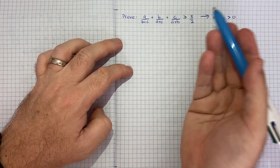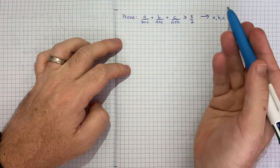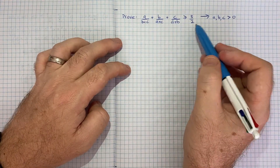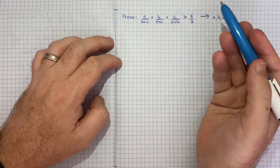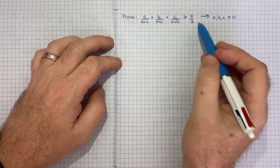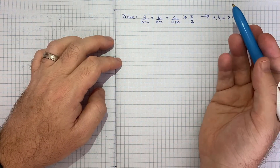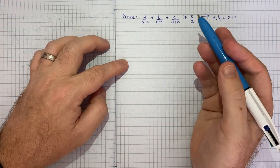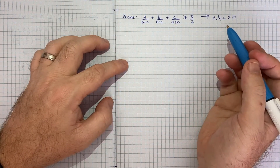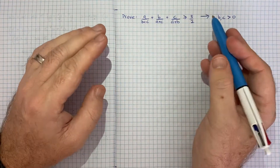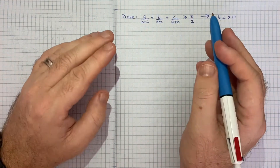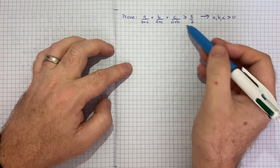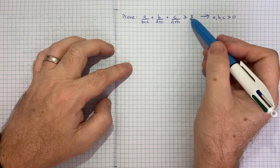Now it can be hard to know where to start with a question like this. A technique I've mentioned in the past is that you can start to play around with the result you're given and see if that gets you anywhere. That didn't really help for this question, but what did help was thinking about the result that if you add something with its reciprocal you get something greater than or equal to two — that jumped out as being potentially useful.